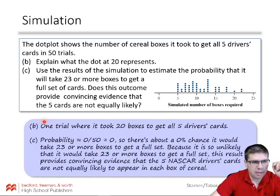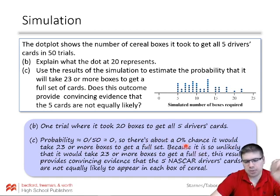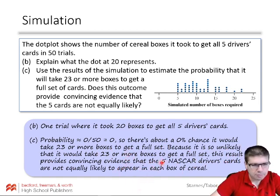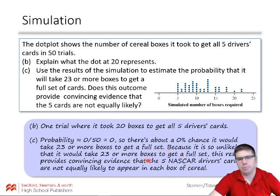So the probability ultimately for that was zero out of 50, or zero. So there's about a zero percent chance it would take 23 or more boxes to get a full set. Now realize they only did 50 trials. If we did enough trials, you'd eventually see it happen by chance, but it seems really unlikely. Because it's so unlikely that it would take 23 or more boxes to get a full set, this result provides convincing evidence, statistically significant evidence, that the five NASCAR drivers' cards are not equally likely to appear in each box of cereal.